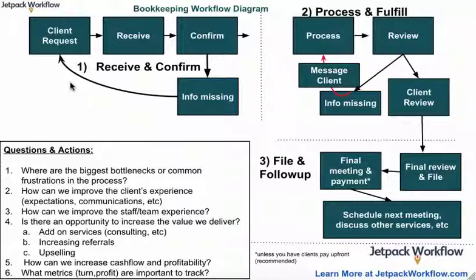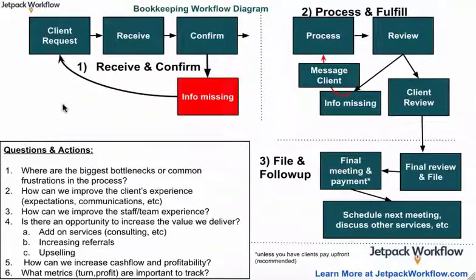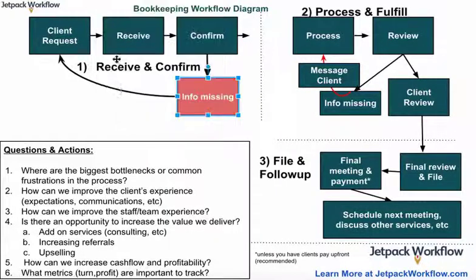So let's look at the first one: receive and confirm. You need something from your clients — you receive this information, you review it, and if info is still missing, it gets sent back. When I do a baseline for Jetpack or for clients, we always identify huge bottlenecks in red. So I can come up to here — I'm in Google Draw right now — and we can go ahead and label this as red, and you can see that we're going to do this throughout the entire workflow.